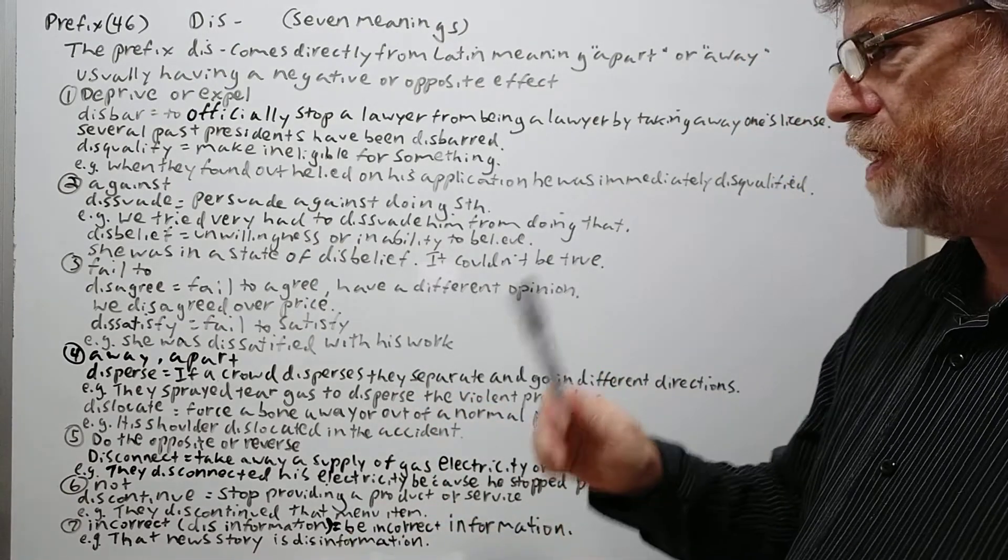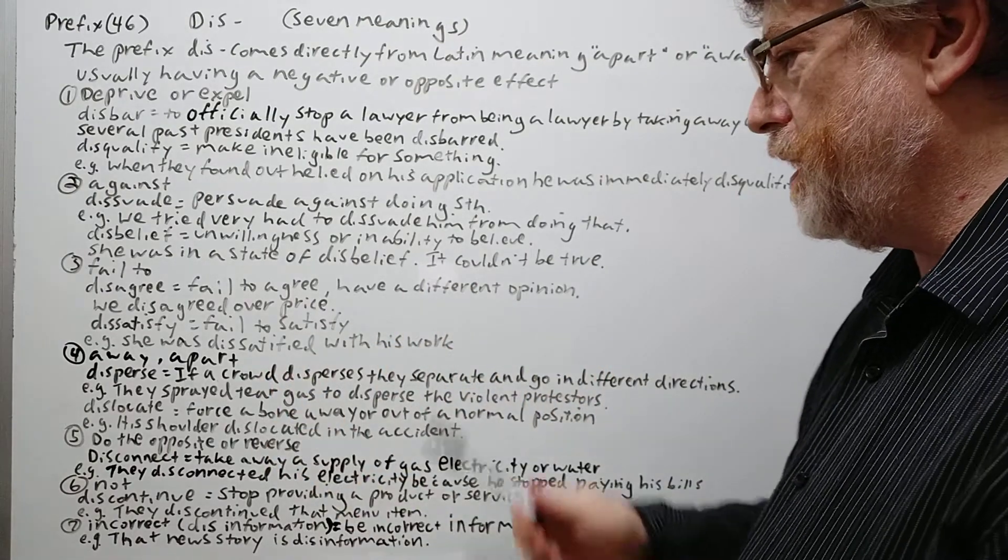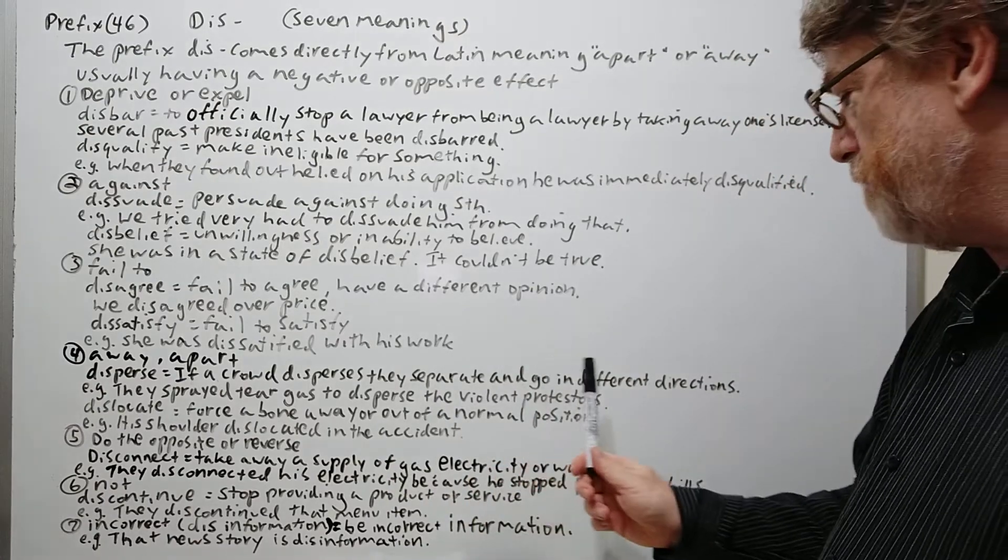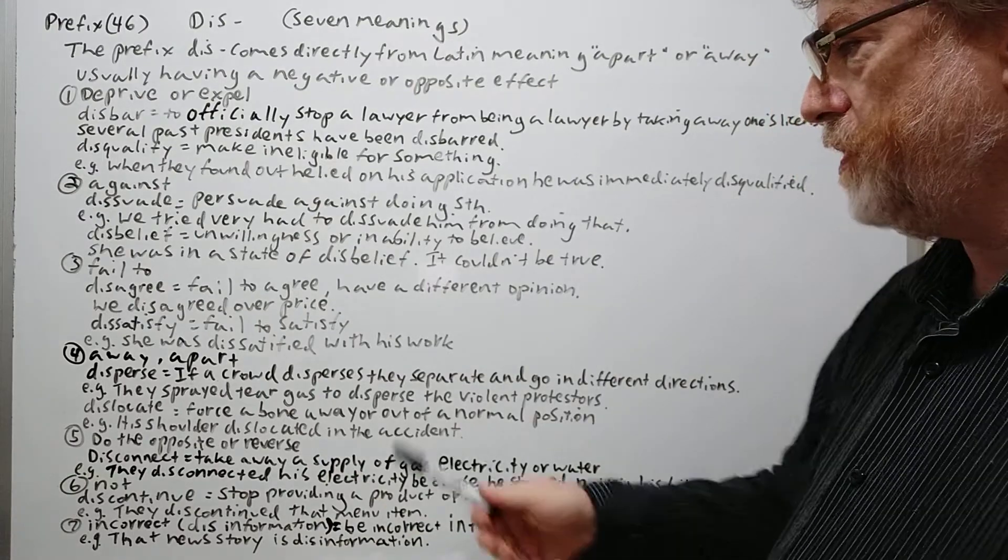Number four here, the meaning is more like away or apart. Our first word is disperse. If a crowd disperses, they separate and go in different directions—that's what you're trying to make them do. The example: they spray tear gas to disperse the violent protesters, to make them separate, to make them go apart.